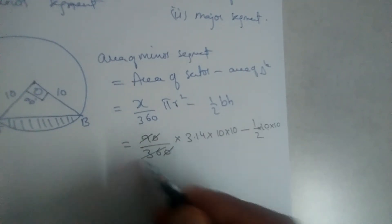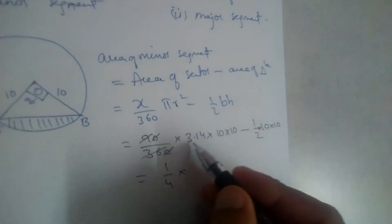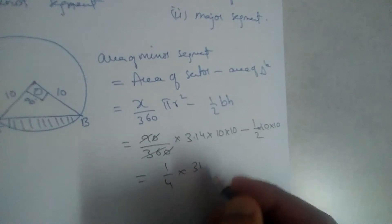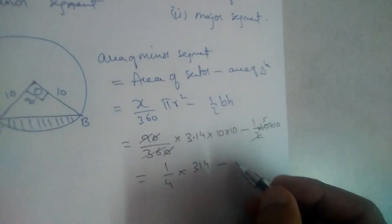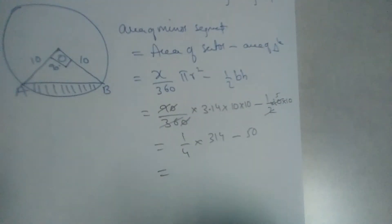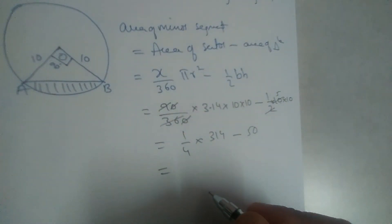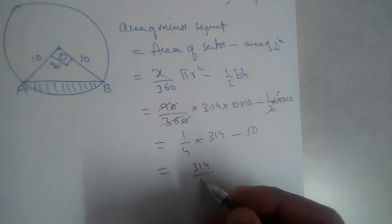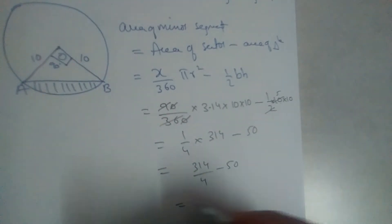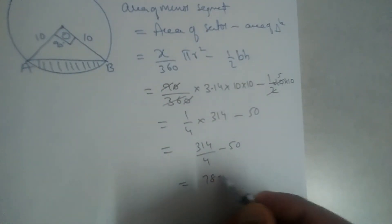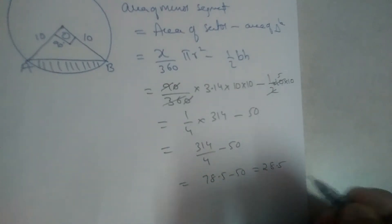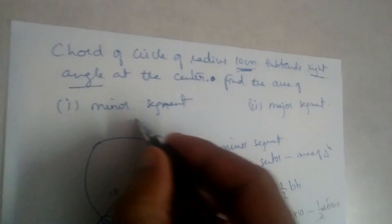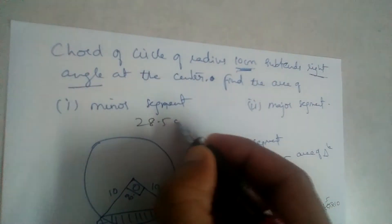So this will give us 1 by 4 and 3.14, 3.14 into 100, minus this is 5, so this will give us 50. So this is 314 divided by 4 minus 50. And this is 78.5 minus 50, it will give us 28.5. So 28.5 is the area of minor segment, 28.5 cm square.